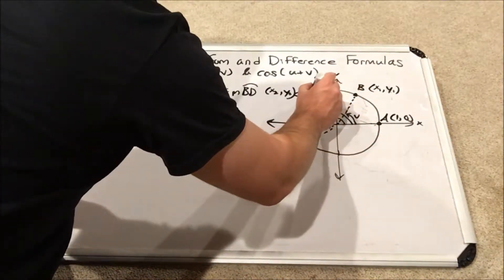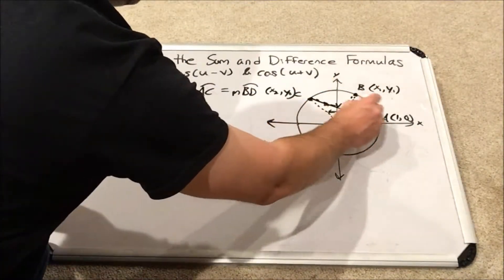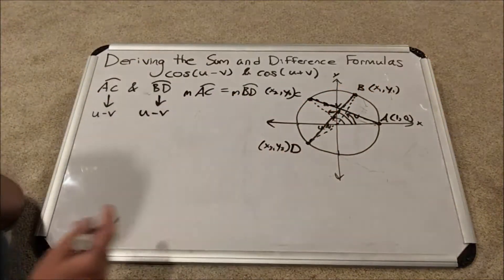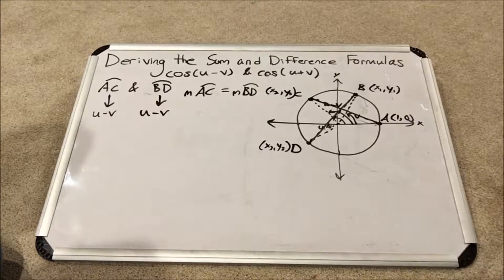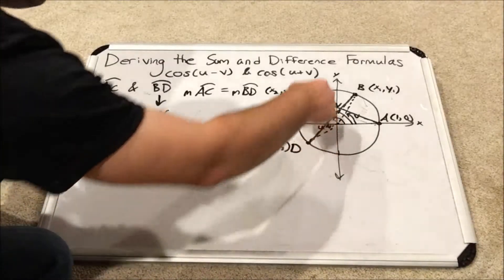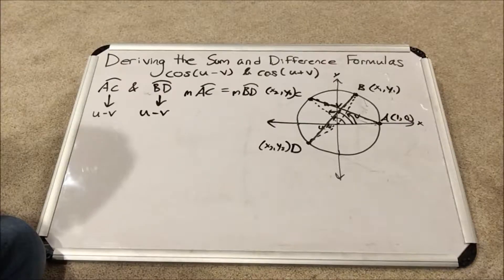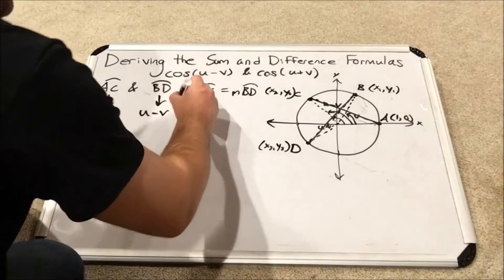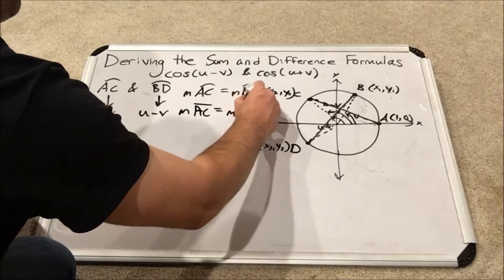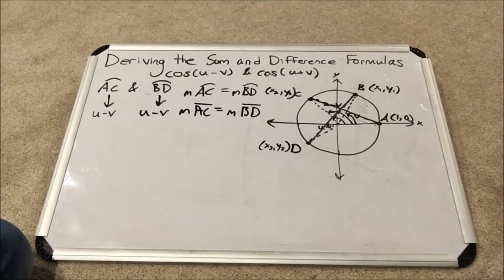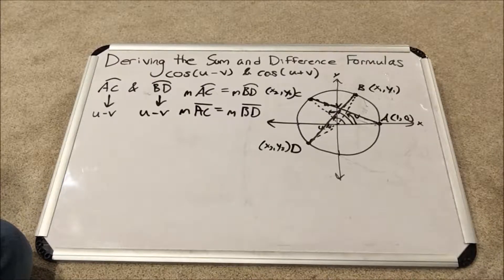These two chords must be congruent, meaning they have equal measure. And that follows directly from the arcs-chords conjecture. If we have two arcs that are congruent, then the chords that connect those two endpoints for the arcs are also congruent. So this means that the measure of chord AC is equal to the measure of chord BD. Now these chords are line segments. And these line segments have a certain distance. And we will find that distance using the distance formula.